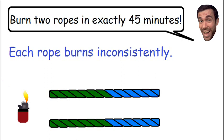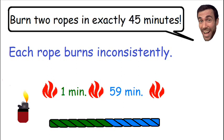For example, if we light the left side of the top rope, the green part of the rope could possibly take one minute to burn, which means the blue part would have to take 59 minutes to burn, giving us a total time of one hour.